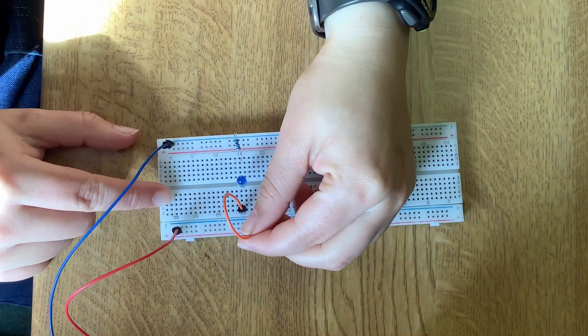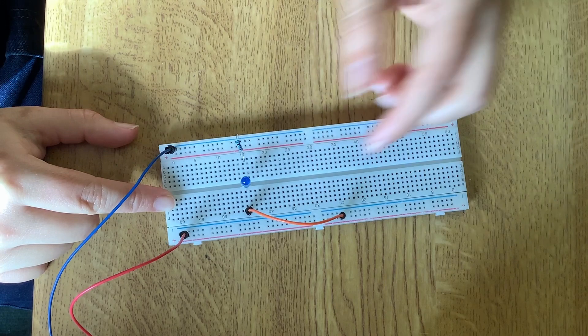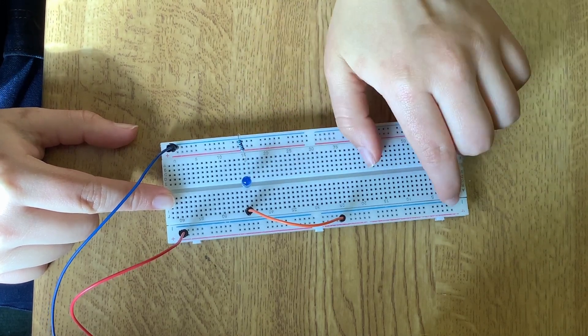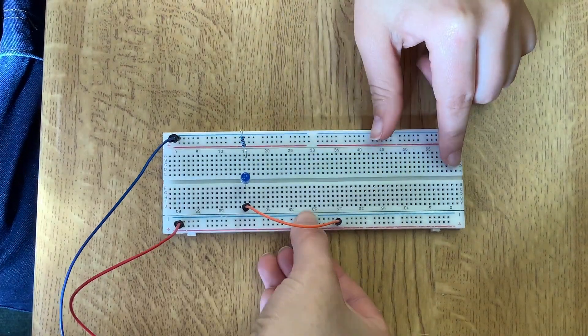So if I disconnect it from here and put it for example here there's no light because in here there's no 3.3 volts, the connection goes until here until the middle.